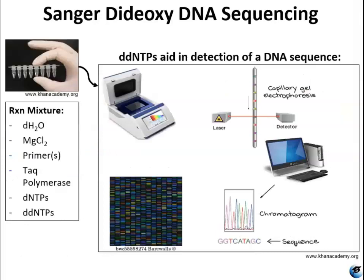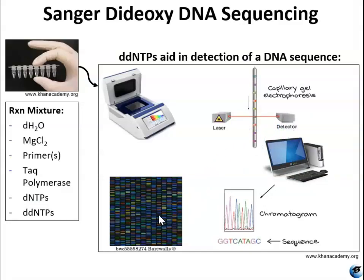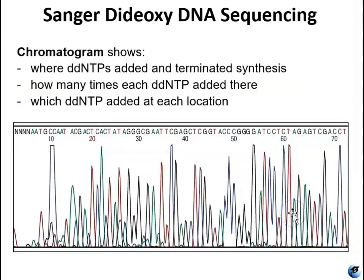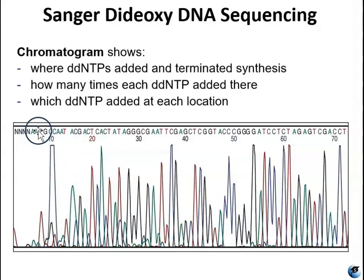The process looks very similar to PCR, with an essentially identical reaction mixture except for the addition of the dideoxynucleotides. There is also an added step of the electrophoresis being read by a laser. The laser can detect the sizes and colors of the DNA fragments and compiles them into what is called a chromatogram. The chromatogram shows where the dideoxynucleotides added, how many times they added at that location, and which dideoxynucleotide it was. The chromatogram has curves that show how many times a particular nucleotide added to a particular location, giving you an idea of how reliable the data is. Up at the top you have the actual sequence — for example: AAT, GCC, AAT, AC, GAC, T, CAC, TAT, and so on.